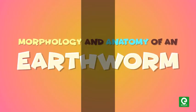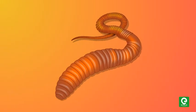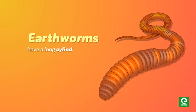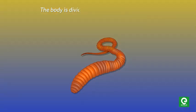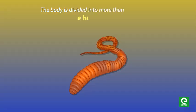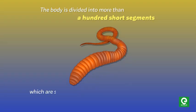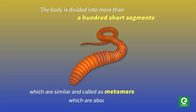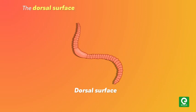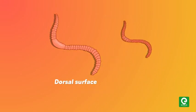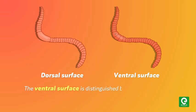Earthworms have a long cylindrical body. The body is divided into more than a hundred short segments which are similar and called metameres, numbering about 100 to 120. The dorsal surface of the body is marked by a dark median mid-dorsal line, while the ventral surface is distinguished by the presence of genital openings.